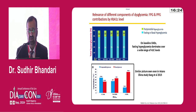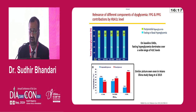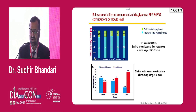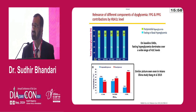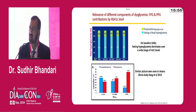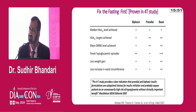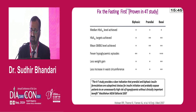There is great relevance of different components of glycemia. Fasting hyperglycemia contributes significantly to all levels of HbA1c. That is the reason it is very important to handle fasting hyperglycemia. Fix the fasting — this is well-established in four key steps. It takes care of median HbA1c. Targeted HbA1c is very well achieved with basal insulin.